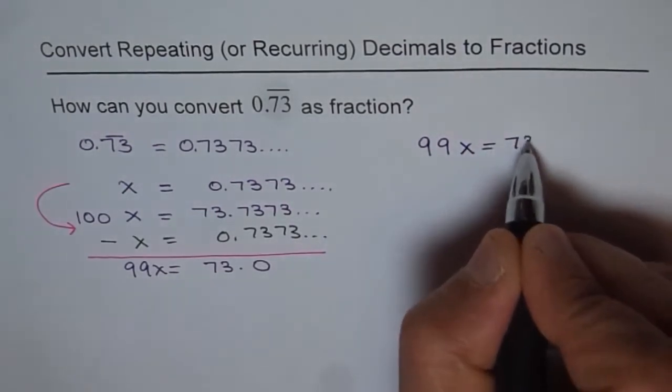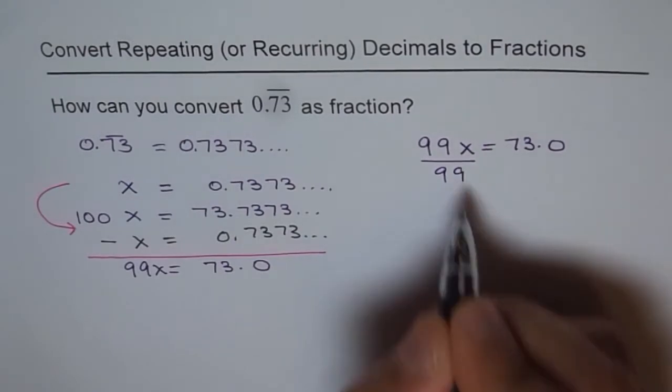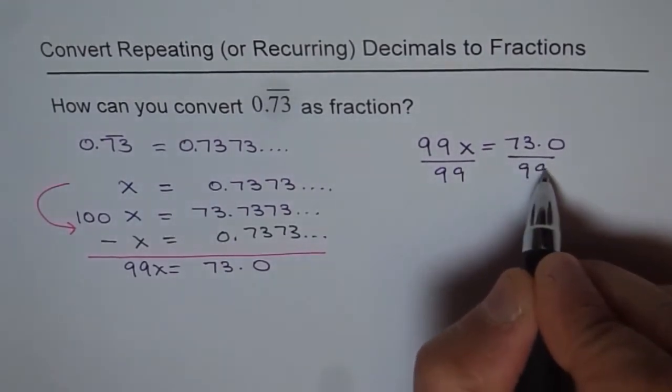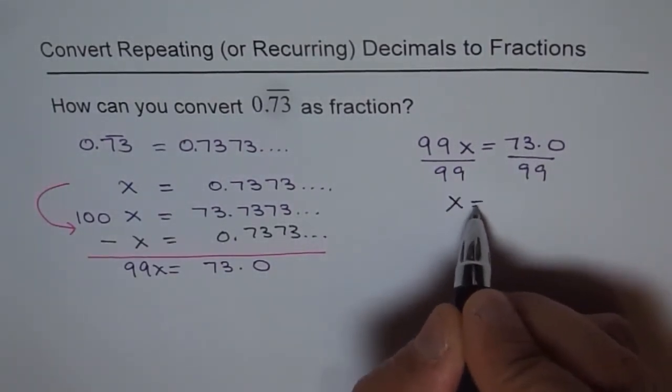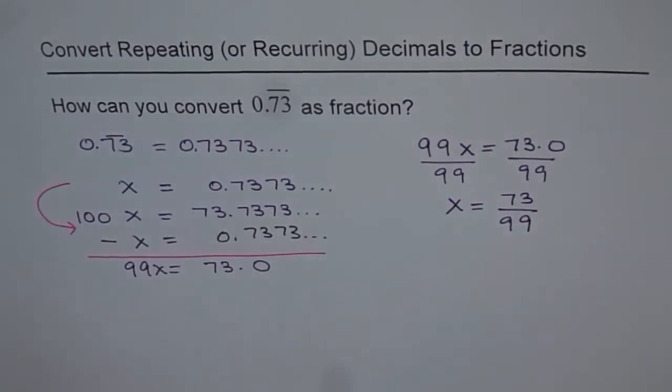If I divide by 99 both sides, I get x equals 73 by 99. So that is the fraction.